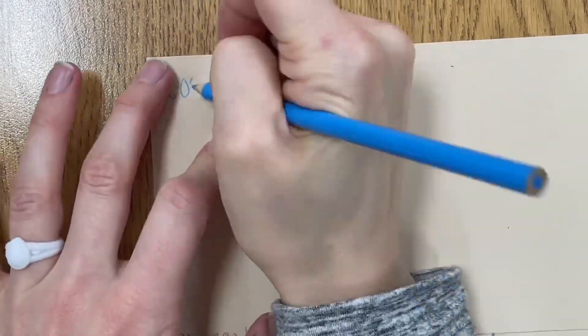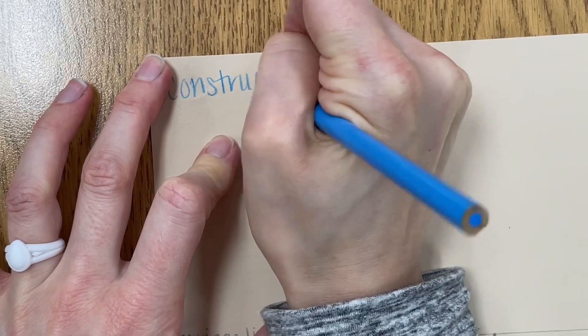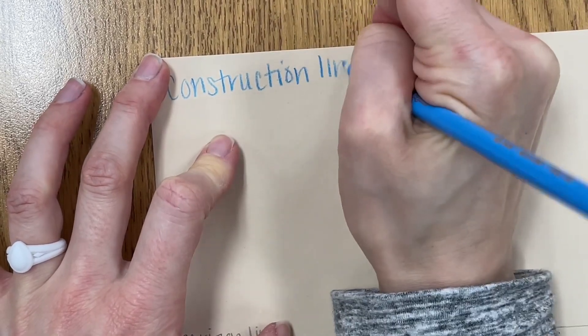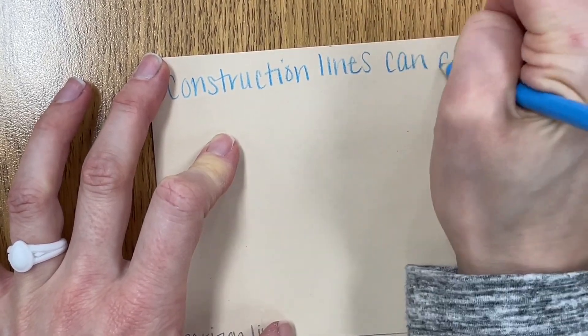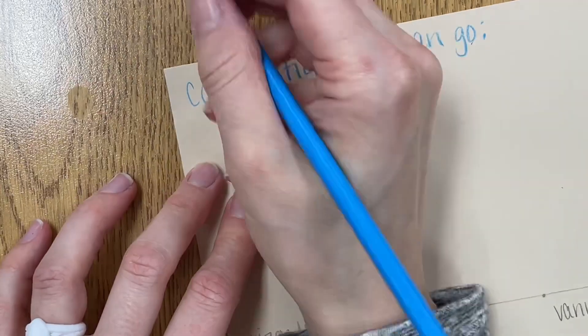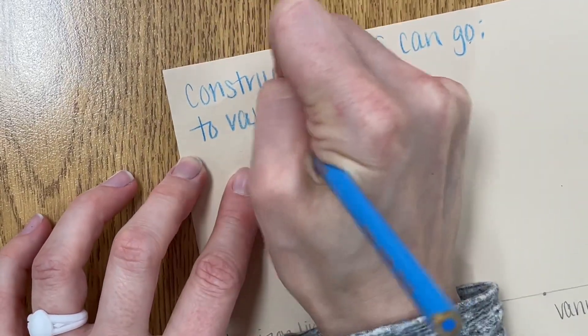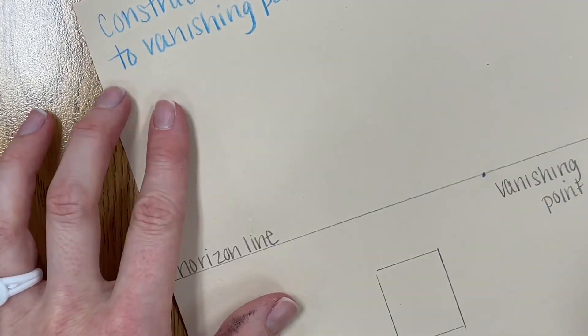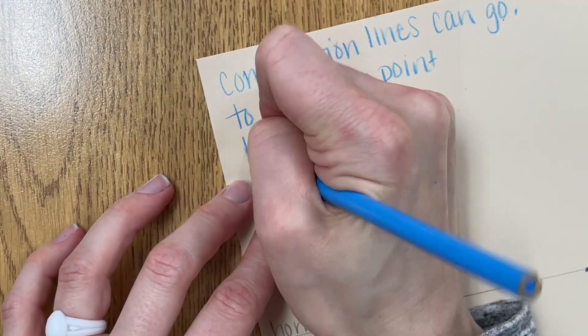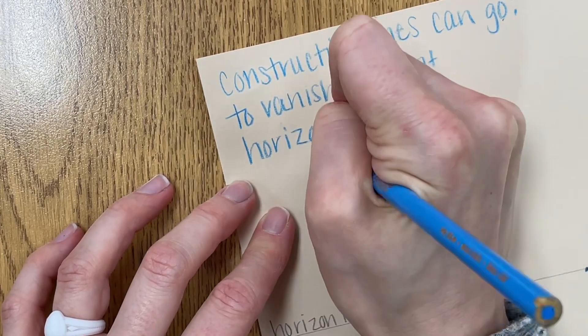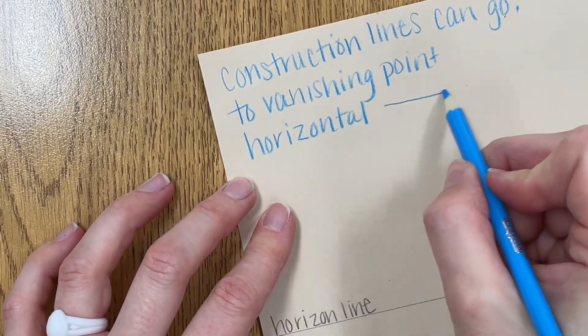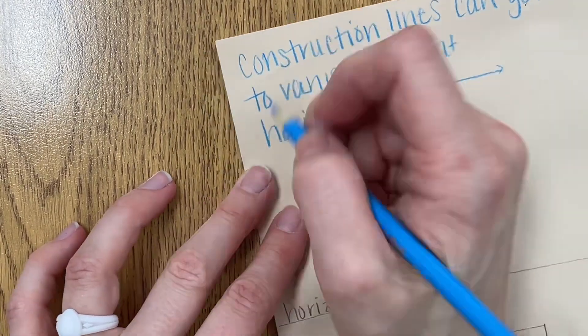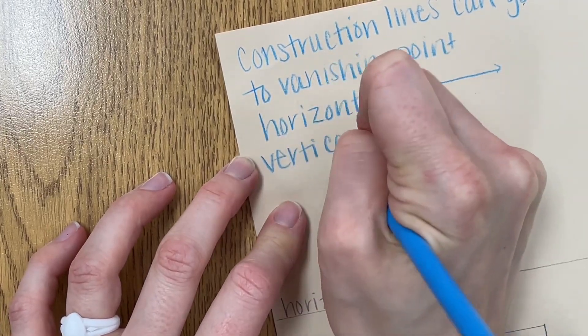It's important to make note that your construction lines that help you to draw your three dimensional boxes can only go certain ways. This is mainly for when you're doing boxes but it is a good thing to note that your lines can go to the vanishing point. They can be horizontal and they can be vertical. Horizontal is side to side and vertical is up and down.